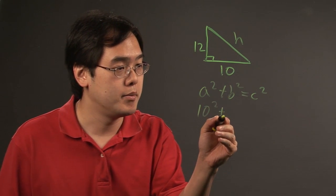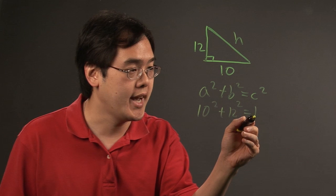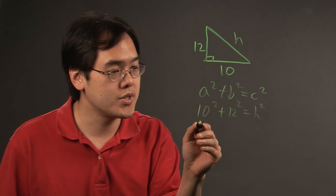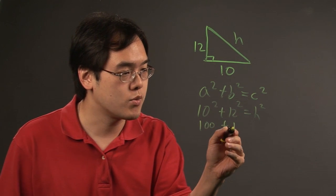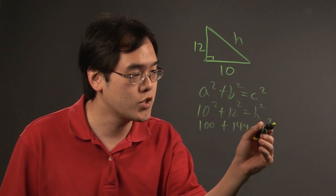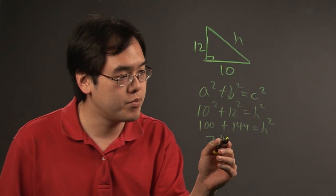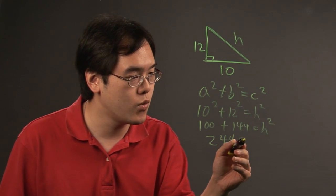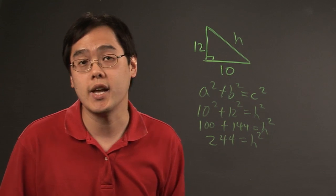So you have 10 squared plus 12 squared is equal to h squared. So you have 10 squared is 100. 12 squared is 144. And that's equal to h squared. So 100 plus 144 is 244. And that's equal to h squared.